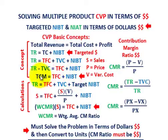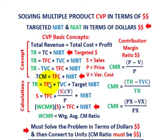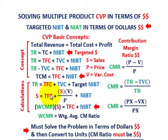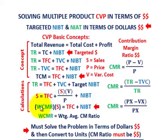When solving for cost-volume-profit in terms of dollars, we concentrate on the total contribution margin. Our equation becomes: total revenues equals total fixed cost plus total variable cost plus some targeted net income before taxes. What it all boils down to is this: we're going to determine our weighted contribution margin ratio, and that times our sales equals our total fixed cost plus some net income before taxes.